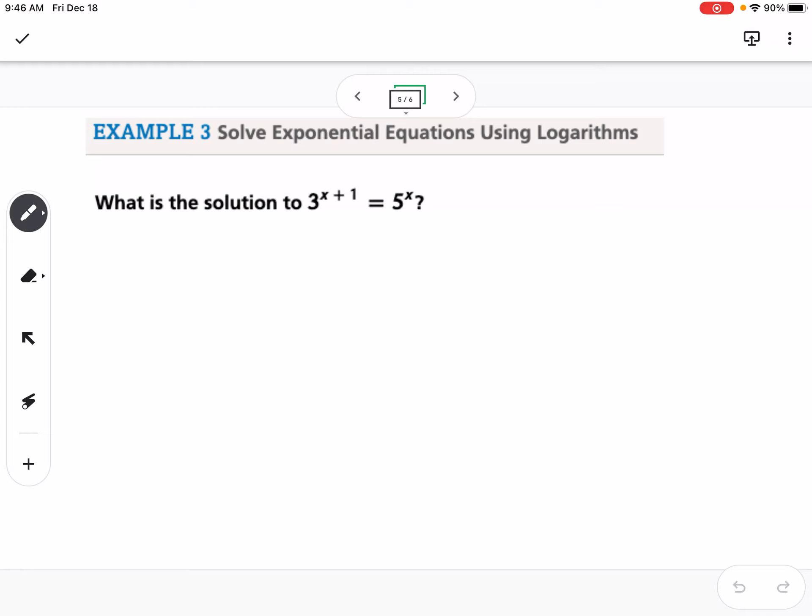Our next example: if we have a base of 3 and a base of 5, this isn't like the first example where we can turn them both into a similar base, because 3 and 5 aren't related in that way.